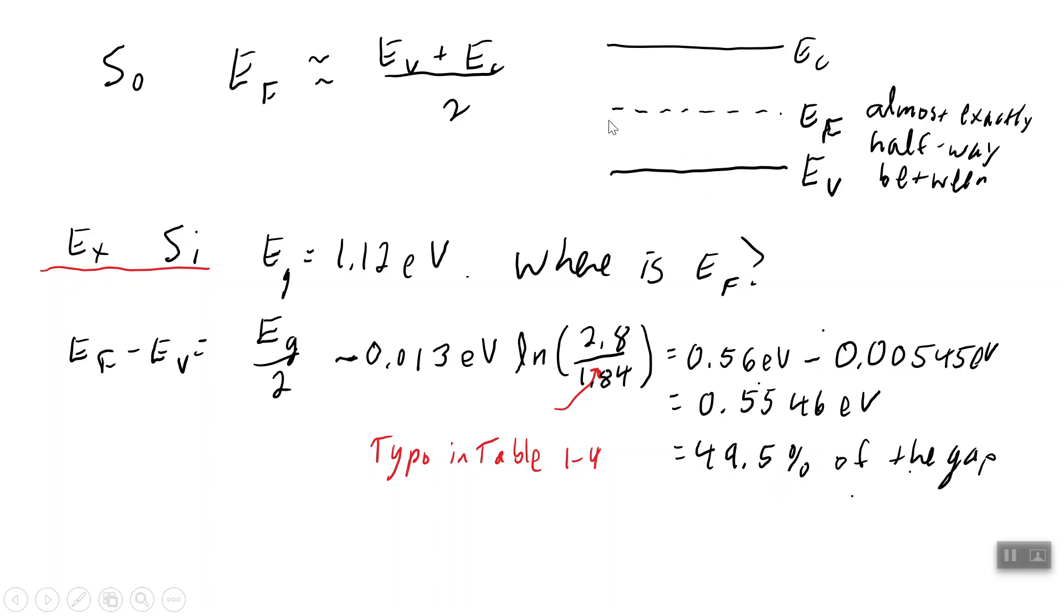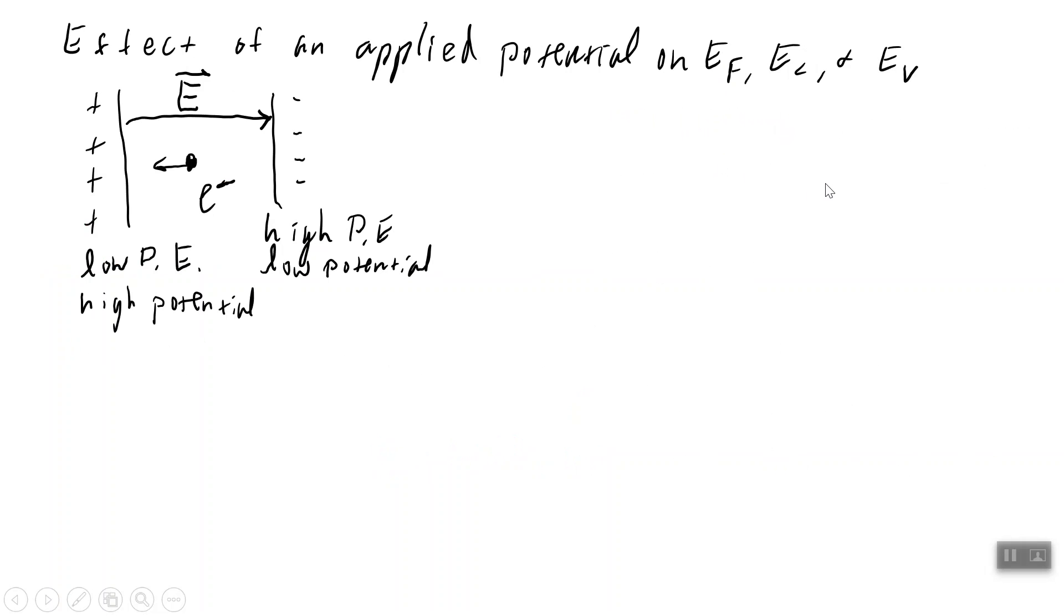All right, so the Fermi energy in silicon is on the center of the gap, off by about half a percent of the gap. All right, now let's try and make an electric field on. What does that do?